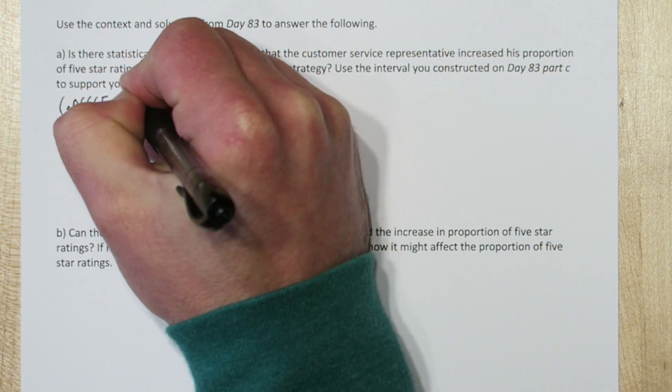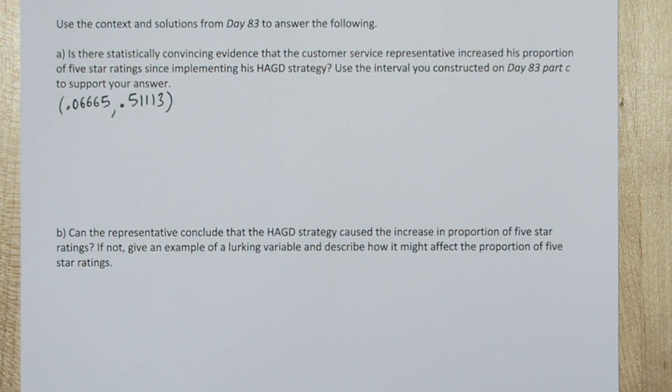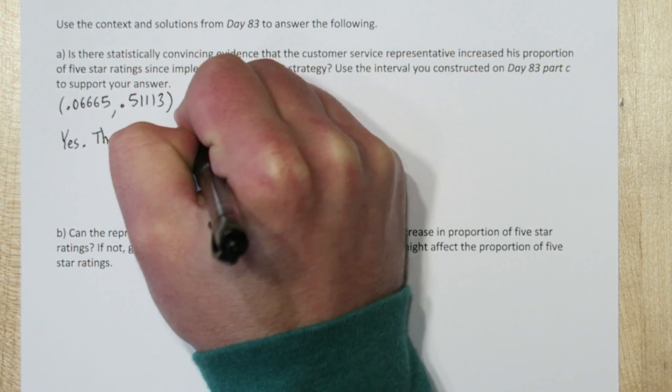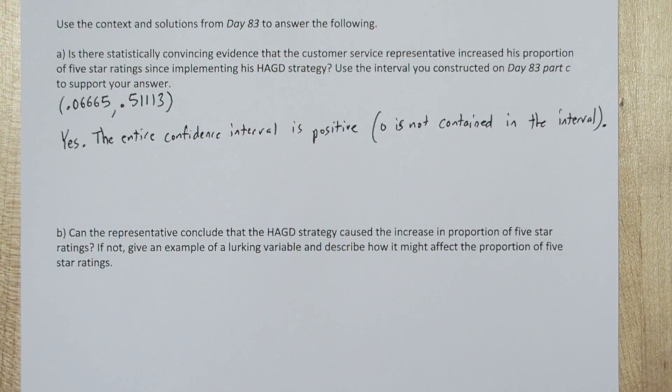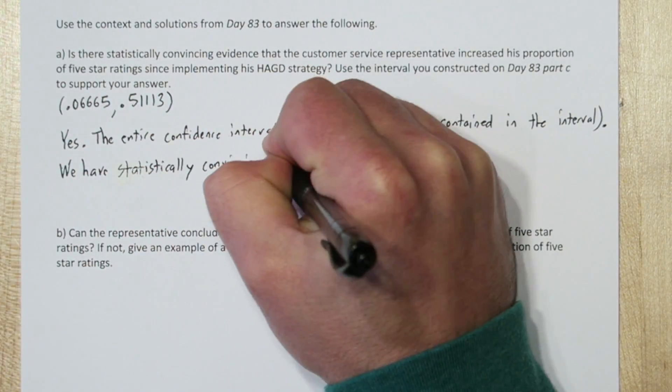The confidence interval gives us an interval of feasible values his improvement in five-star ratings could be. Now since this entire confidence interval is positive, in other words zero is not contained in the interval...